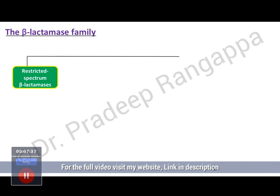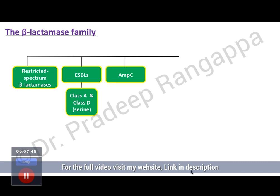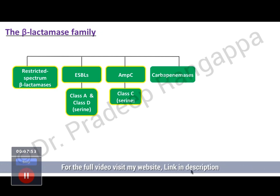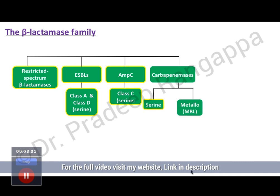First you have restricted spectrum beta-lactamases, then ESBLs — extended spectrum beta-lactamases. In ESBLs, you have class A and class D, which are called serine enzymes. Then you have AMP-C, which is a different category — class C, which is serine based. Then you have carbapenemases. In carbapenemases, you have serine and MBL — metallobeta-lactamases, which is the most dreaded. NDM — New Delhi metallobeta-lactamases — created a lot of attention and is resistant to many antibiotics.